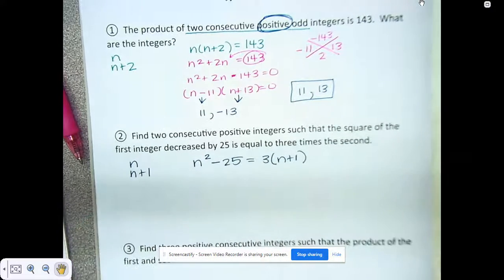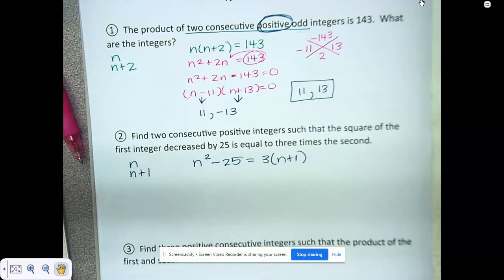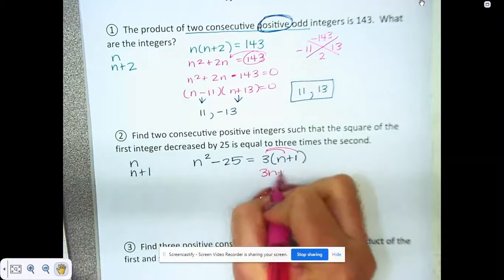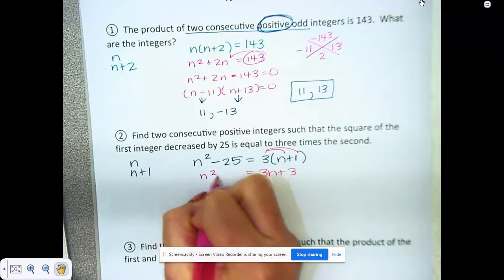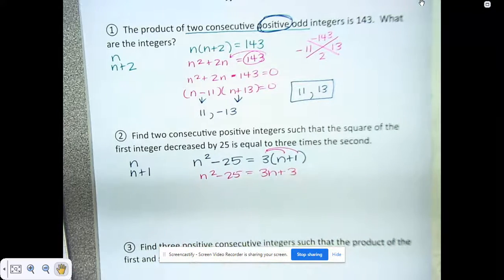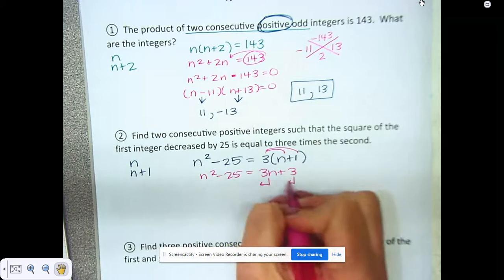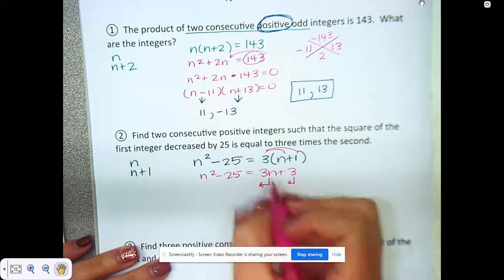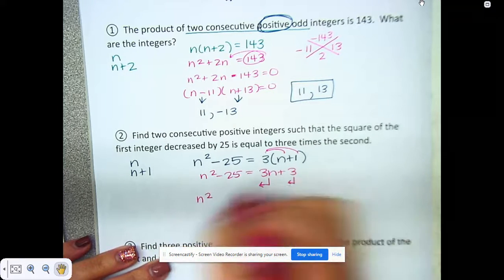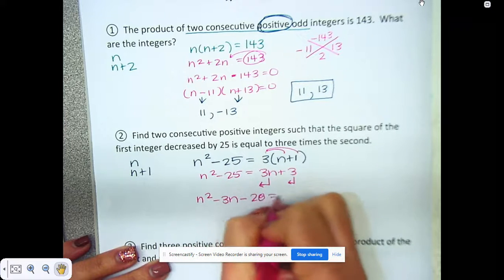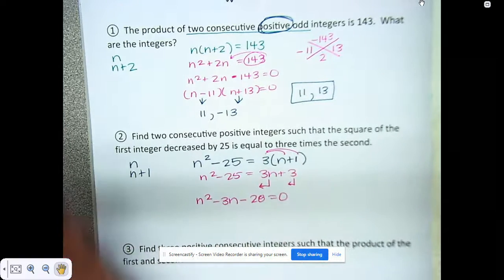You have to write out what it says: the square of the first decreased by 25 is equal to three times the second. We're going to distribute here. Then we're going to move everything over and set it equal to zero, so that's going to be n squared minus 3n minus 28 is equal to zero. Now this is what we are factoring.